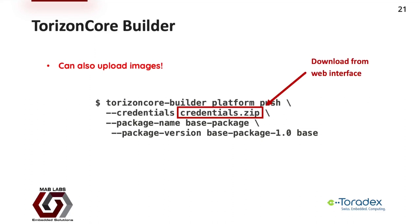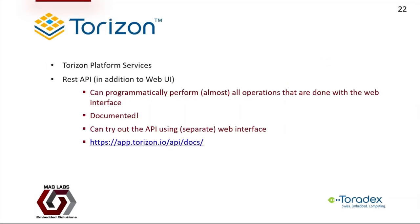We can also use Torizon Core Builder to upload images to the Torizon backend. We would need to download the zip file that contains our credentials against the Torizon backend. Torizon Platform Services now supports a mechanism to communicate with the Torizon backend in an automated or programmatic fashion. In addition to a web UI, it also has a REST API that allows us to programmatically perform almost all of the operations we can do with the web interface. It's very well documented, and we can try out the API using a separate web interface accessible via the link shown here.